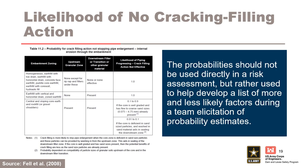Fell et al. 2008 provides suggested guidance for the likelihood of non-crack filling action based on embankment zoning characteristics. There is no crack filling action for homogeneous embankments or embankments with no upstream zone, so the probability is 1. If an upstream granular zone and downstream filter transition or other granular material are present, crack filling action depends on the compatibility of particle sizes of the granular soils upstream of the core and in the downstream filter transition. Crack filling is more likely to stop pipe enlargement when the core zone is deficient in sand-sized particles that can be provided by washing in from the upstream zone. The probabilities should not be used directly in a risk assessment, but rather to help develop more and less likely factors during team elicitation.